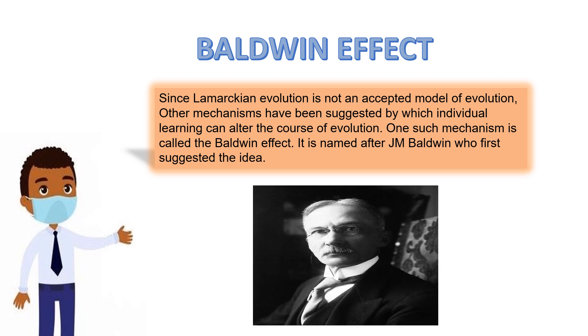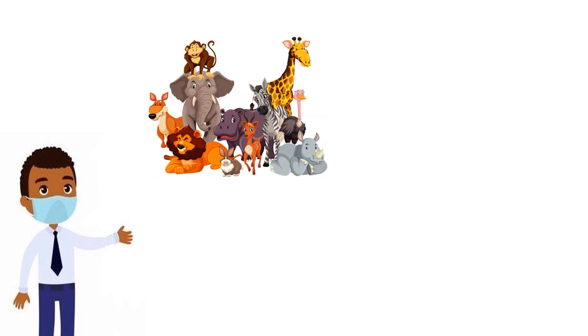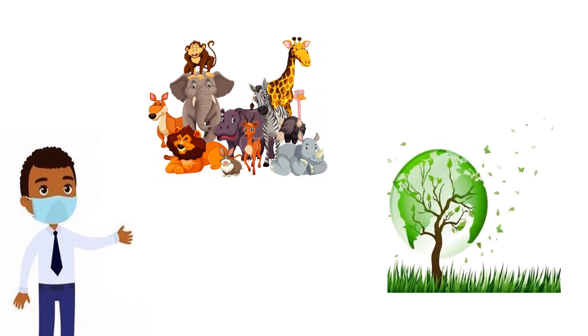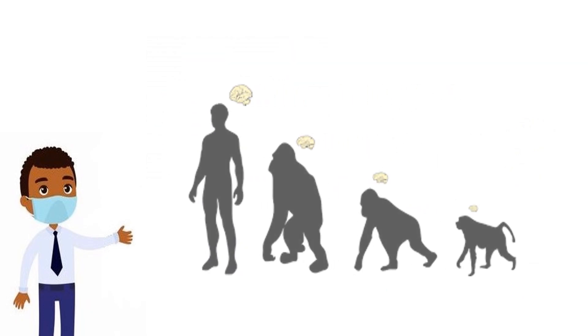The Baldwin effect is based on observations that if a species is evolving in a changing environment, there will be evolutionary pressure that increases the capability to learn during their lifetime. The Baldwin effect provides a mechanism that helps the individual for learning and to increase the evolutionary progress during the evolution.